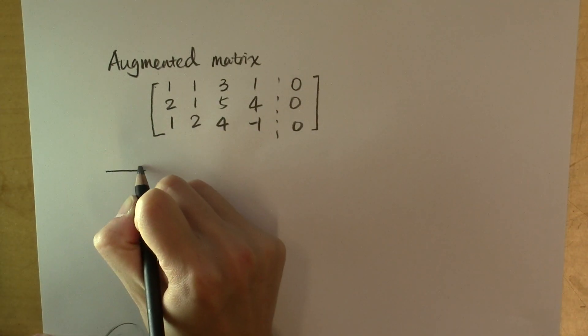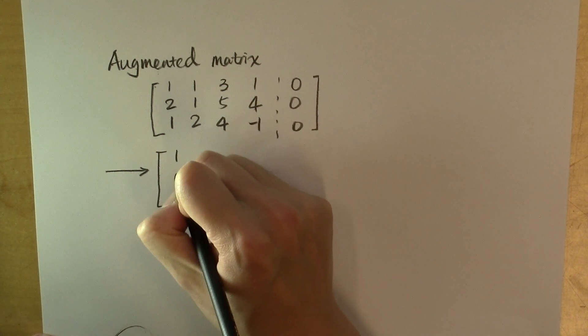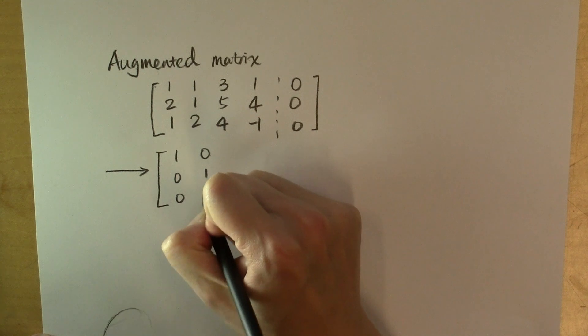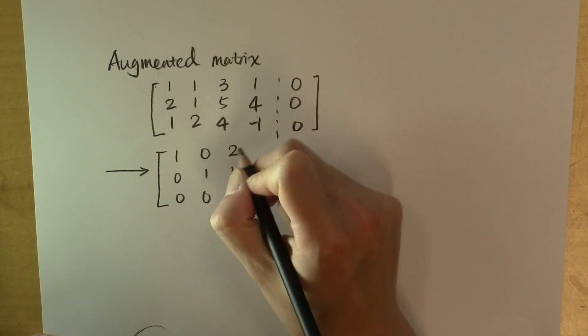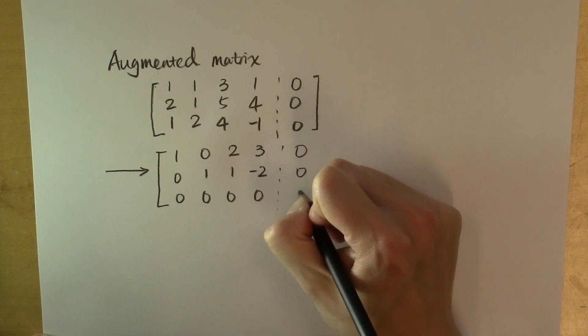So this augmented matrix is row equivalent to its echelon form, which is: 1, 0, 0, 0; 1, 0, 2, 1; 0, 3, -2, 0; and 0, 0, 0.